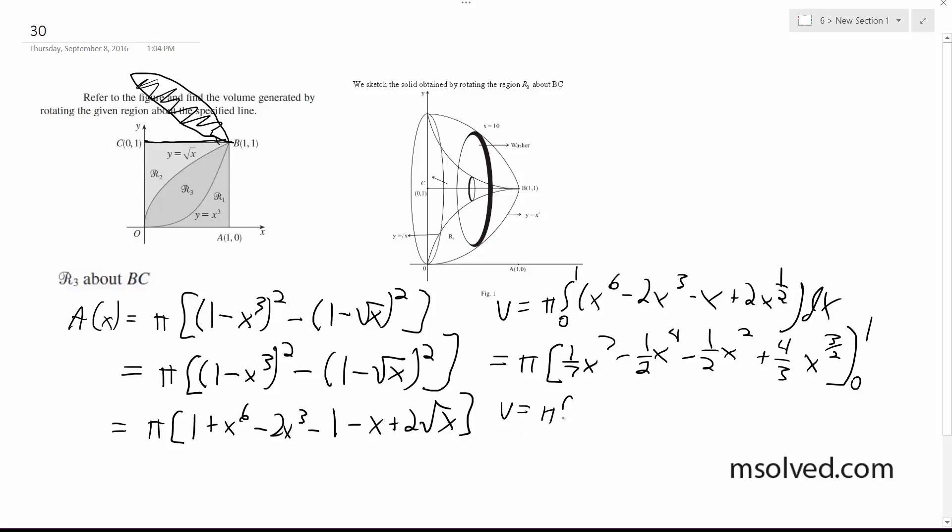Volume is equal to pi times 1 seventh minus 1 half minus 1 half plus 4 thirds. Simplifying this further, finally we get volume is equal to 10 pi over 21. That's it.